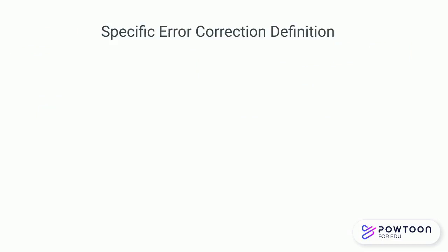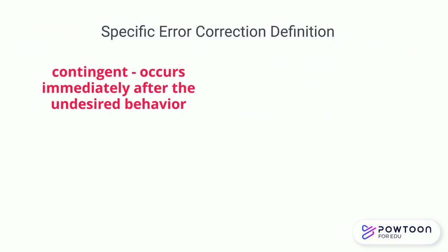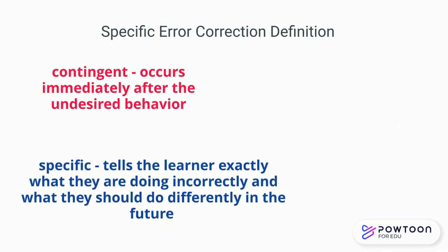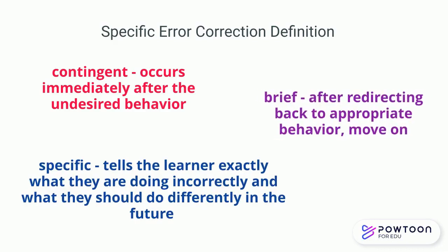Your correction should be contingent — occurring immediately after undesired behavior. It should be specific: tell the learner exactly what they did wrong and what they need to do differently. It should be brief: after redirecting back to appropriate behavior, move on.